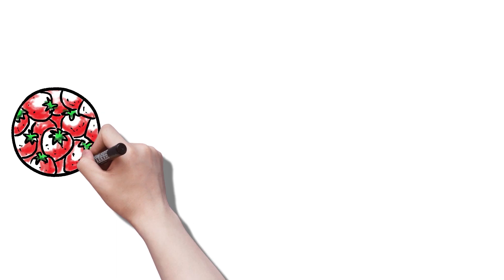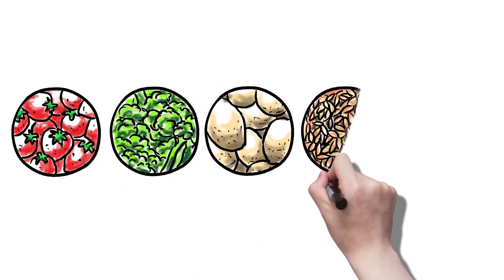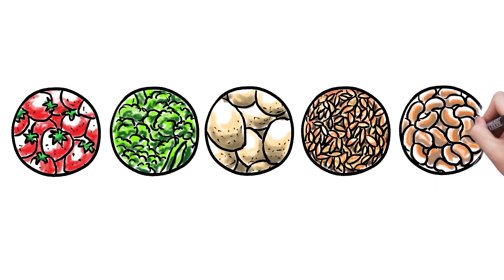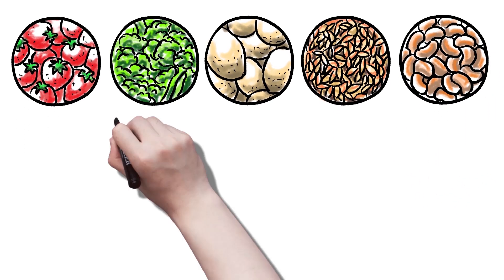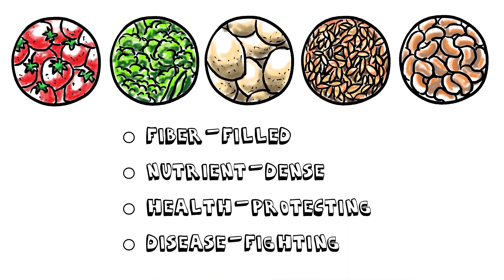The best source of protein is as close to nature's package as possible. Whole grains, beans and lentils, veggies, fruits, nuts, and seeds. These fiber-filled, nutrient-dense, health-protecting, disease-fighting foods provide everything we need to grow healthy and strong. No matter if you are a bookworm or a world-class athlete.